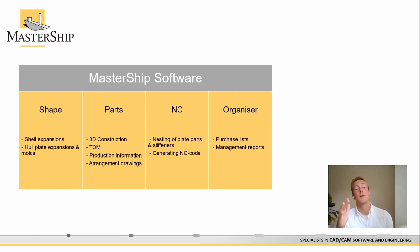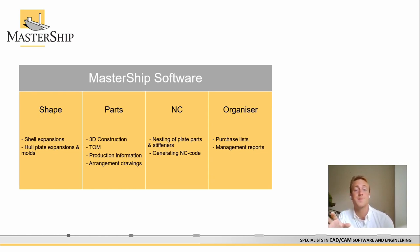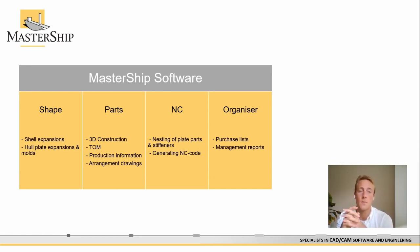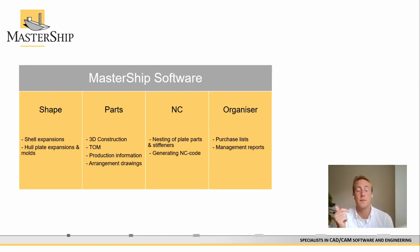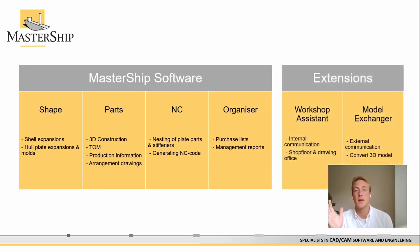In the Shape module you can make shell expansions and hull plate expansions, which you can use for classification. The Parts module is where you make the 3D construction model — it's also the largest module. The NC module is used to generate cutting codes and nested plate parts. The Organizer handles purchase lists and management reports. Each module can be licensed individually, though we recommend licensing the complete package.